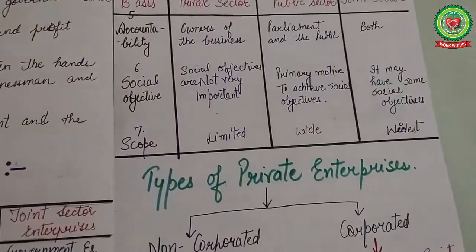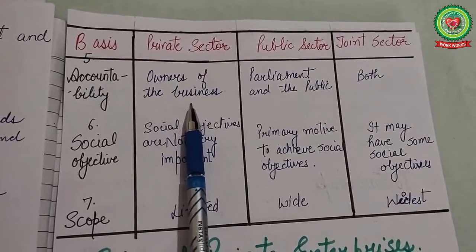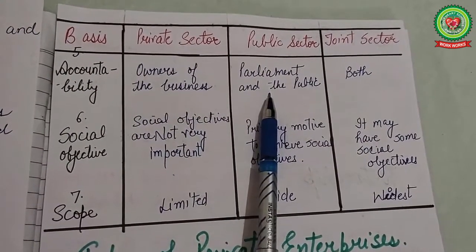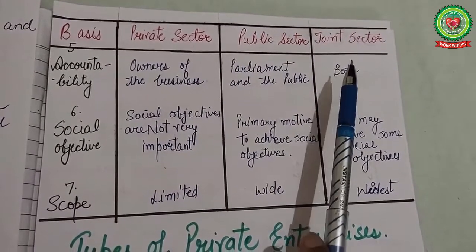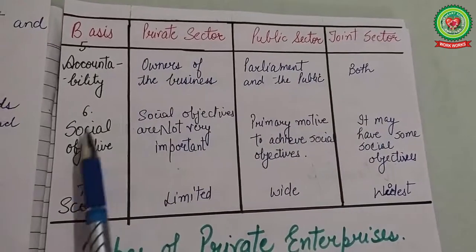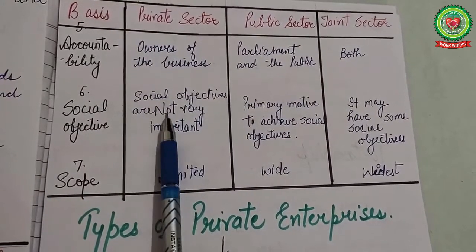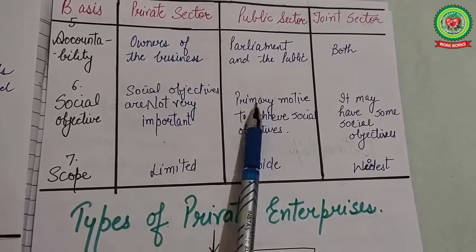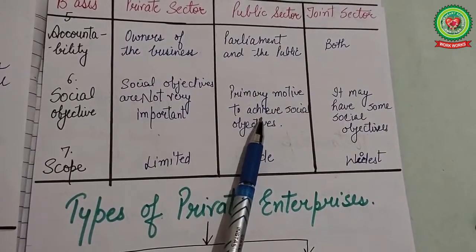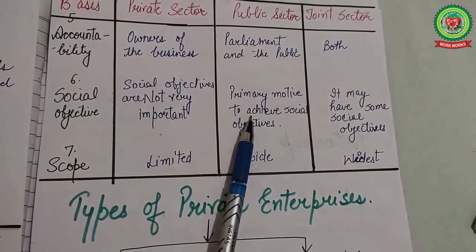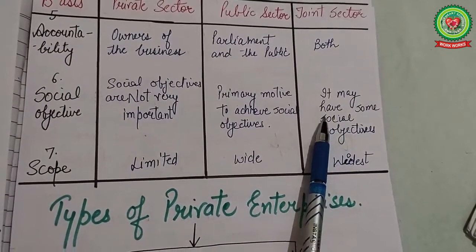The fifth difference is accountability: private sector is accountable to the owners of the business, public sector is accountable to the parliament and the public, and joint sector is accountable to both private entrepreneurs and the public. The sixth difference is social objective: in the private sector, social objectives are not very important; in the public sector, the primary motive is to achieve social objectives like provision of employment and equitable distribution of wealth; and in the joint sector, it may have social objectives.